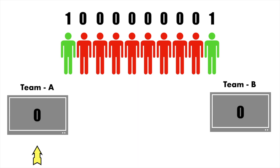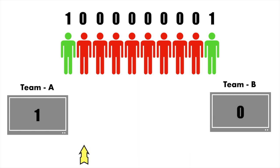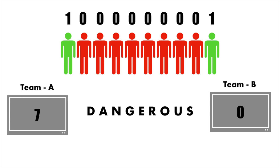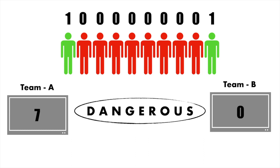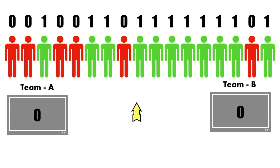Now let's look at the next string: one, triple zero, triple zero, double zero, one. We start counting — the first player is team B, so increment team B's counter, then nullify it and start the team A counter: one, two, three, four, five, six, seven. When the counter reaches seven, the situation is dangerous and the pointer stops and returns a dangerous signal.